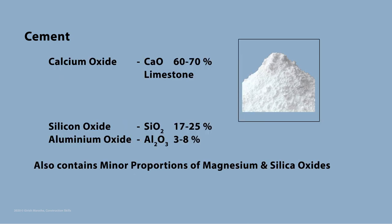Cement consists of calcium oxide at 60 to 70 percent, silicon oxide at 17 to 25 percent, and aluminum oxide at 3 to 8 percent. Cement also contains some minor proportions of magnesium and silica oxides.